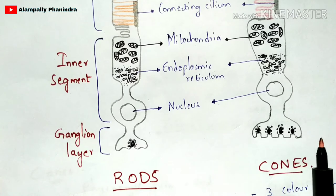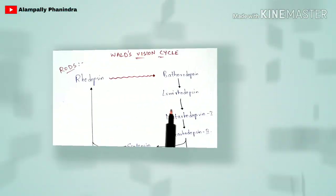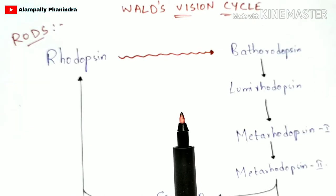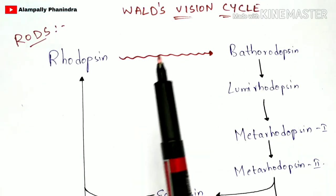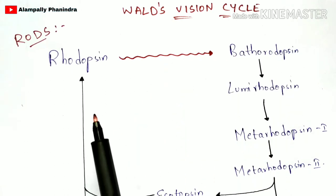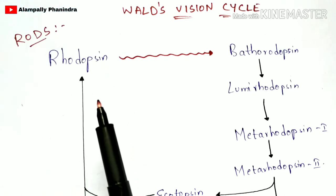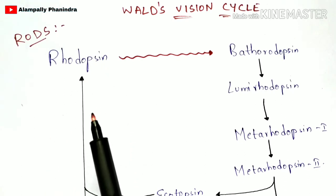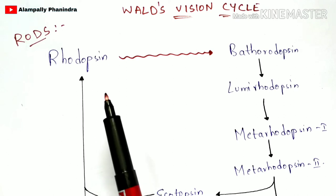Now let us learn about the vision cycle — what is vision cycle and who discovered it. The vision cycle was first discovered by a scientist called Wald, hence it is named Wald's vision cycle. This cycle can be explained in rods as well as cones, with no much difference between them, but there will be a slight difference.